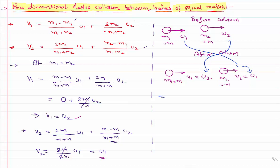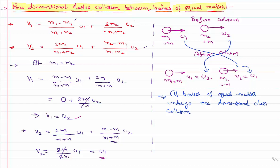So this is the key point we need to know. Bodies of equal masses, if they undergo one-dimensional elastic collision, they simply exchange their velocities. The velocity of the first body is given to the second body, and the velocity of the second body is given to the first body, after one one-dimensional elastic collision.